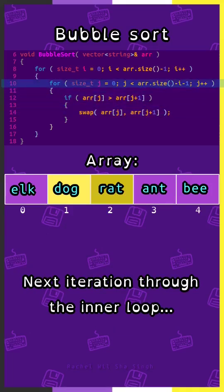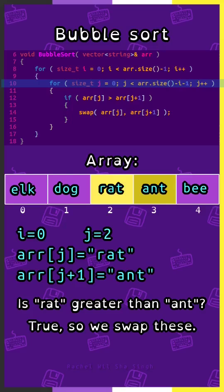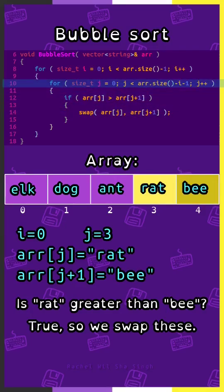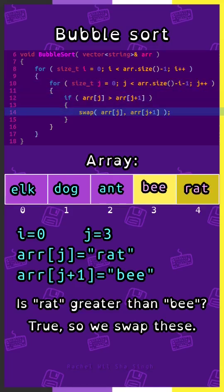Next iteration through the inner loop. j is equal to 2, array sub j is rat, array sub j plus 1 is ant. Is rat greater than ant? True, so swap. j is equal to 3. Array sub j is rat, array sub j plus 1 is b. Is rat greater than b? True.